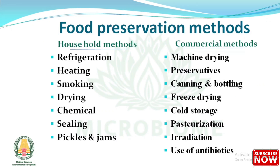About food preservation methods — household methods include: refrigeration, heating, smoking, drying, chemical preservation, sealing, pickles, and jams. Commercial methods include: machine drying, preservatives, canning and bottling, freeze drying, cold storage, pasteurization, irradiation, and use of antibiotics.